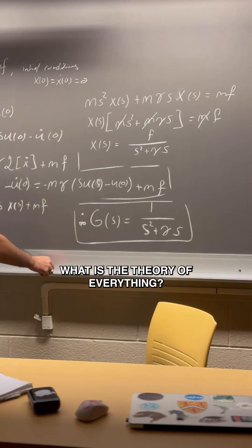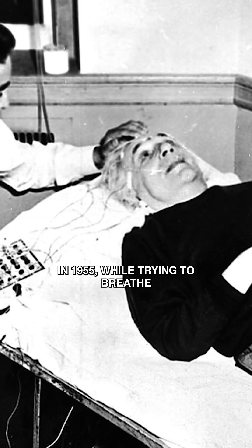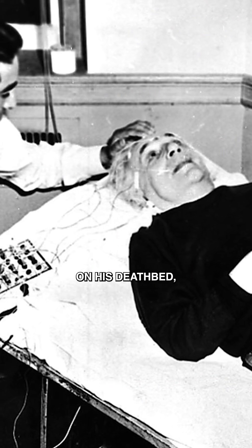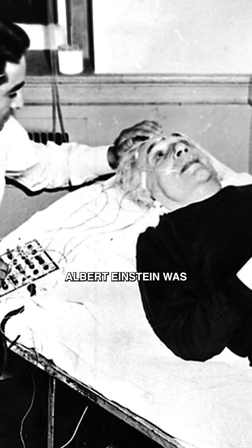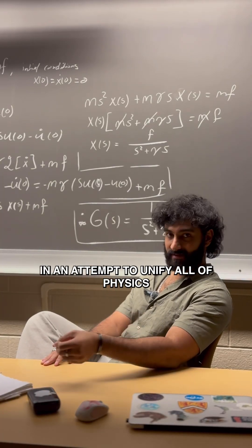What is the theory of everything? In 1955, while trying to breathe on his deathbed, Albert Einstein was writing down equations in an attempt to unify all of physics.